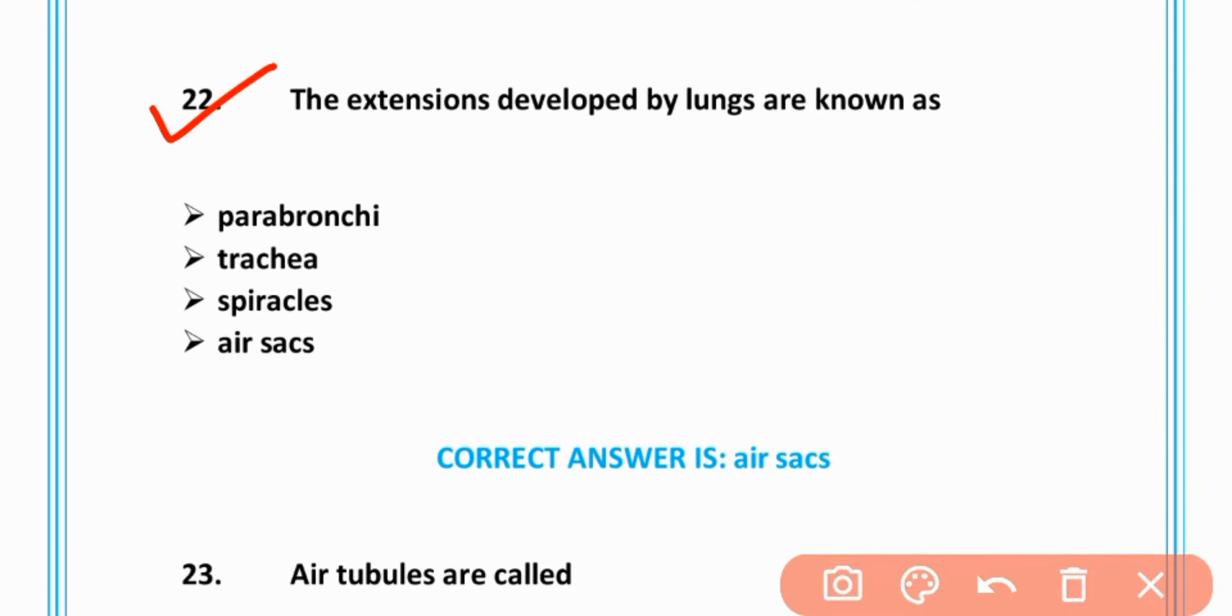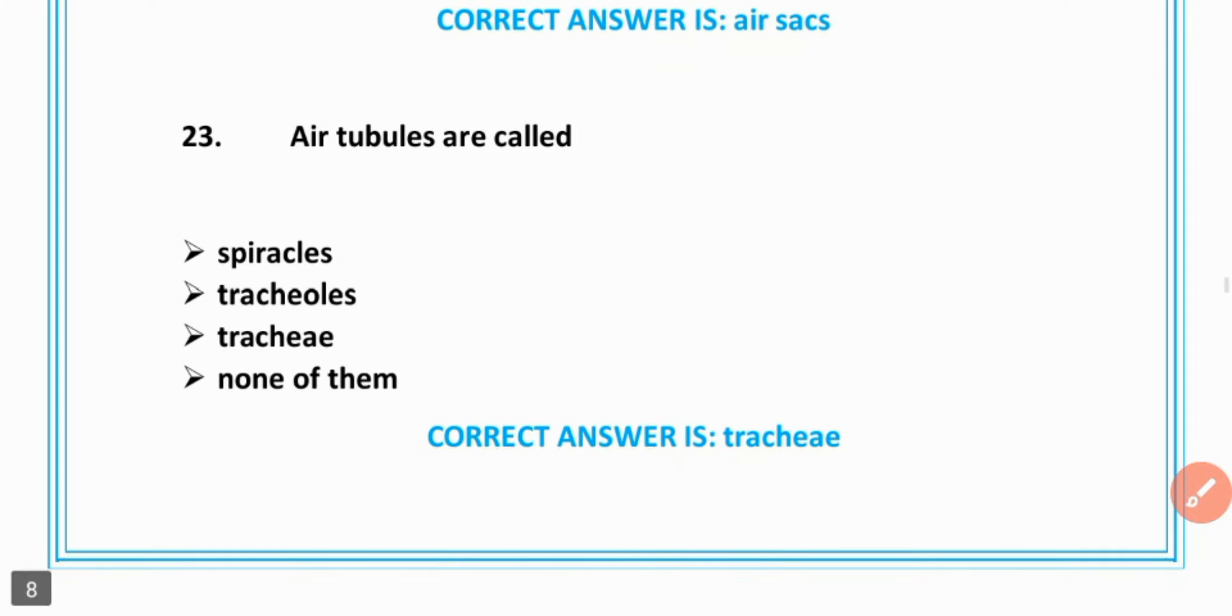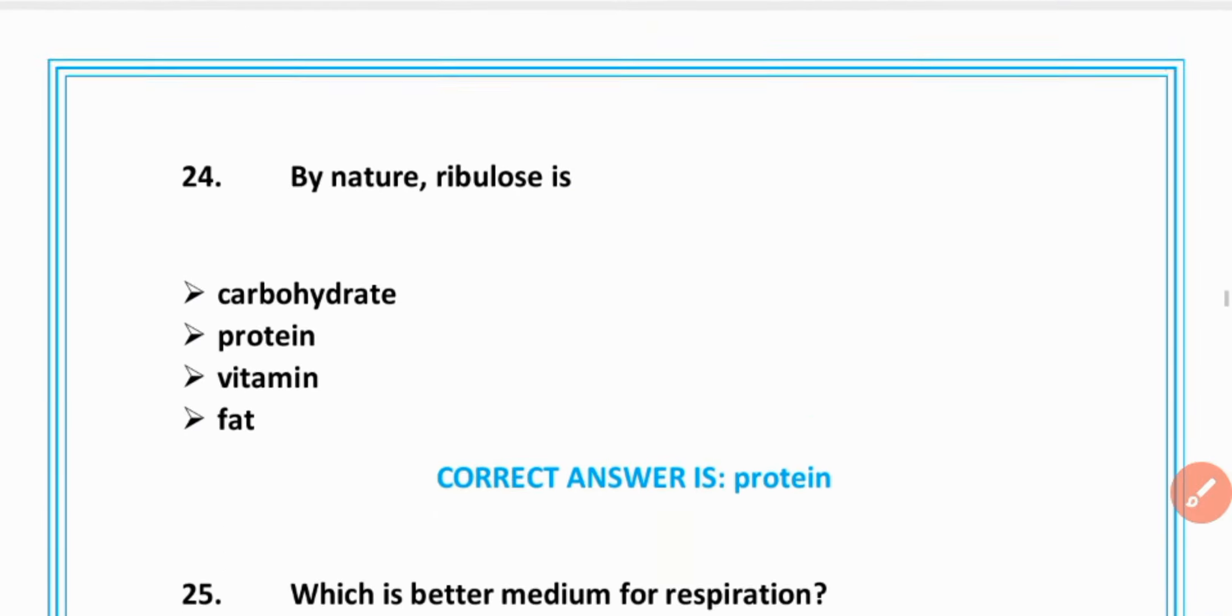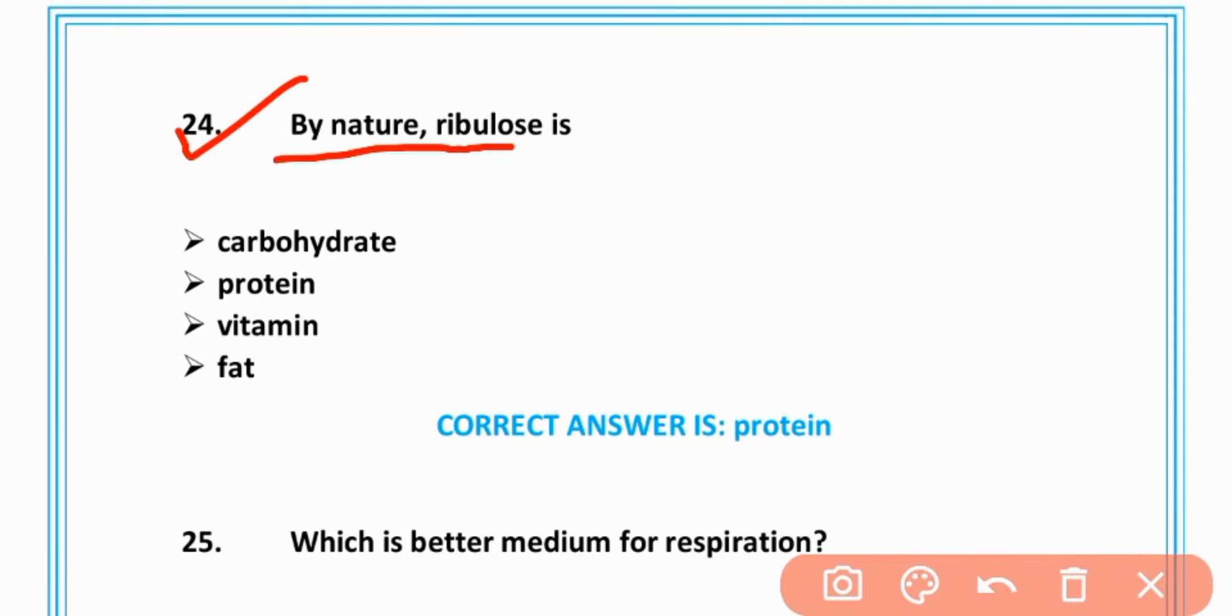MCQ number 22: Extensions developed by lungs are known as air sacs, option D is correct. MCQ number 23: Air tubules are called tracheoid, option C is correct. MCQ number 24: By nature Rubisco is protein, B is correct.